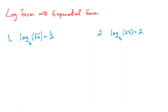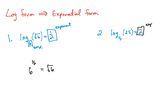First let's convert from log form to exponential form. In log form, whatever the expression equals is going to be the exponent of the base. To rewrite in exponential form, take the base, raise it to the exponent, and write the remaining number on the right side of the equal sign. So six to the one-half is equal to the square root of six — that's true. For the second example, 5 is the base and 2 is the exponent, so 5 squared equals 25. That's also true.